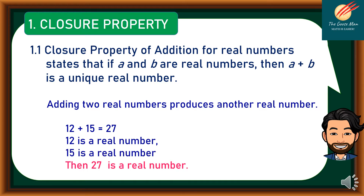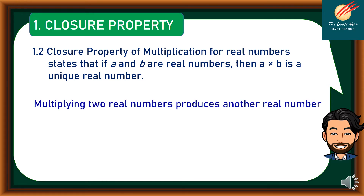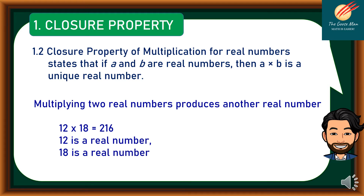The closure property of multiplication for real numbers states that if a and b are real numbers, then a times b is a unique real number — multiplying two real numbers produces another real number. For example, 12 times 18 is equal to 216: 12 is a real number, 18 is a real number, and 216 is a real number. Let's move on to the second property, which is the commutative property.